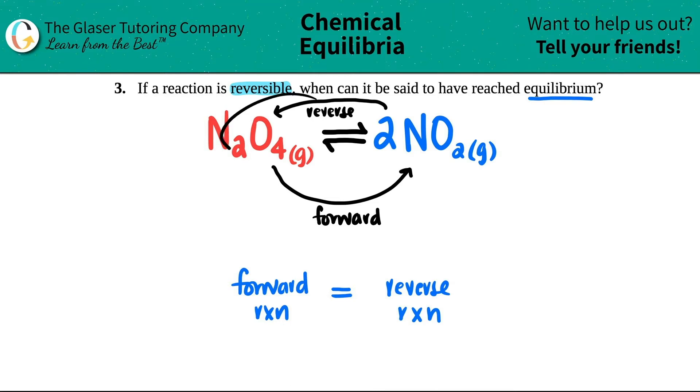The reaction is not really going anywhere. That means that the rate, how fast the forward reaction is going from N2O4 to 2NOs...